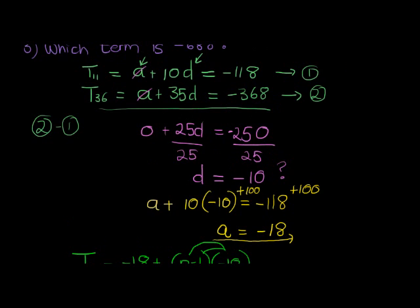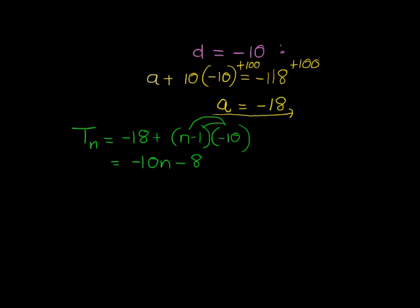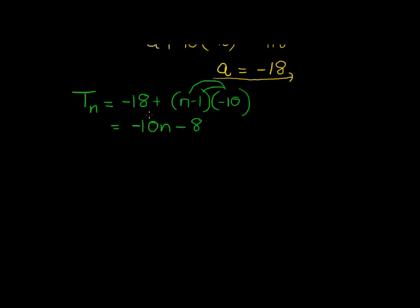There is a simplified form for my general term, and that's what I'm going to use to answer the next question, because now they're asking me for term 41, which is very easy if we have our general term, because this is a formula to find any term. So all I do now is say, okay, term 41 is equal to negative 10 times 41, which gives me negative 410. Negative 410 minus 8 is negative 418.